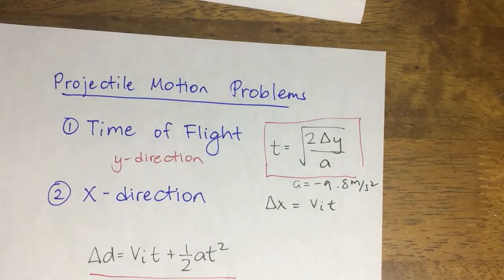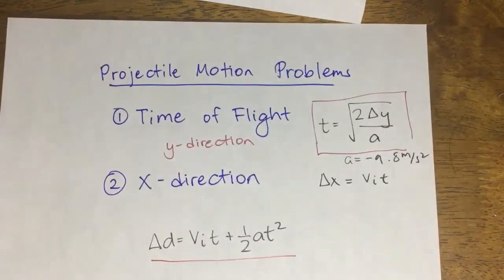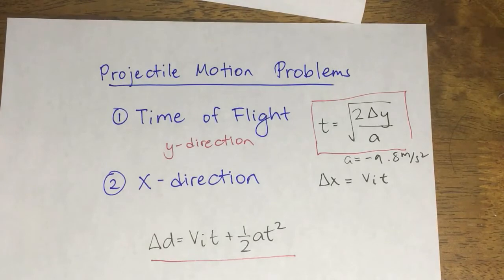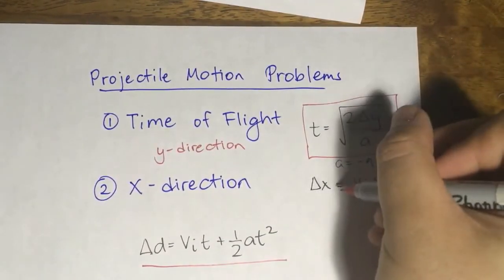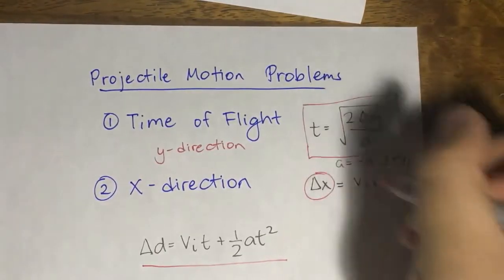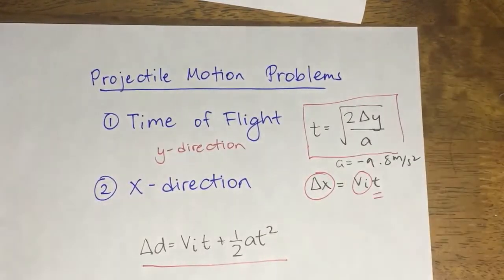And then after you get the time, you will then solve for whatever you're being asked for in the x direction. Usually there are only two possibilities here. You have time, so you're either given or going to solve for x or vi.